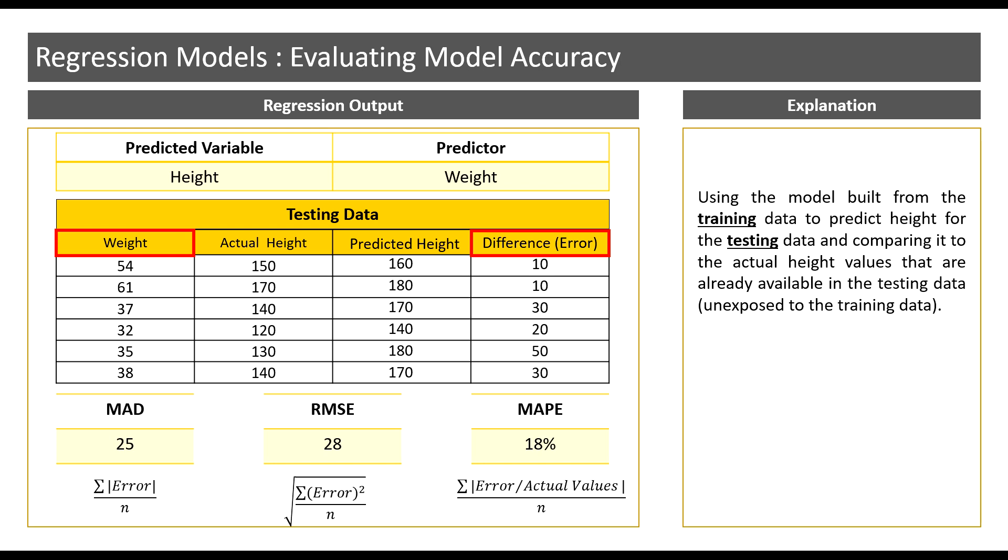Note that since this error is in percentage, it becomes a relative measure. The calculation for this measure is as follows: it is the sum of the absolute values of the ratio of the error terms and the actual values, divided by the number of observations in the testing dataset.